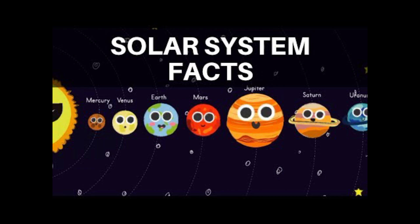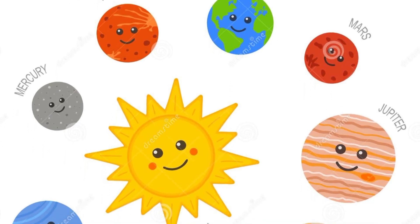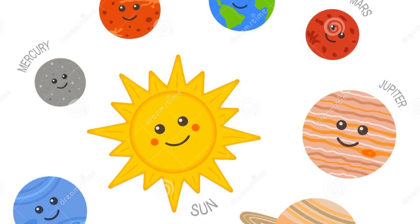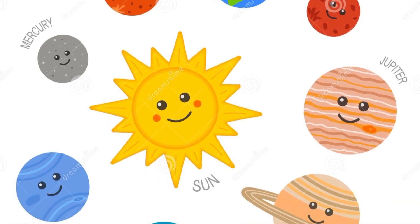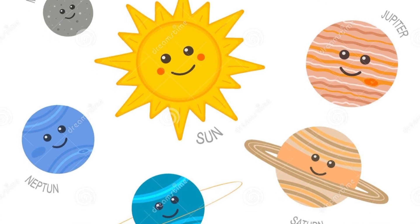The gravitational attraction between the sun and these objects keeps them revolving around it. The eight planets are Mercury, Venus, Earth, Mars, Jupiter, Saturn, Uranus, and Neptune.